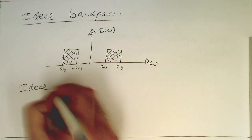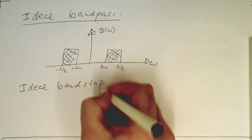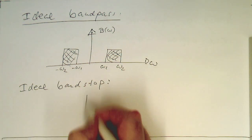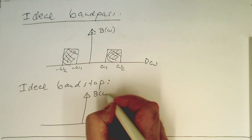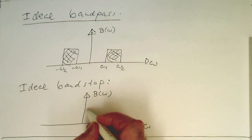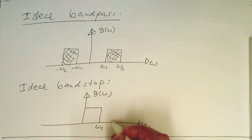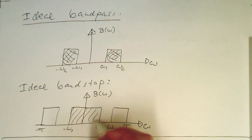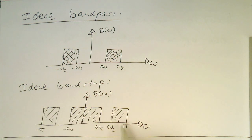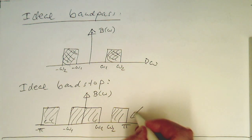And then also just the ideal band stop. Quite useful for our ECG assignment to filter out 50 Hertz. So again, b of omega. And here we have to be again careful. So this stops here at omega 1, goes up to omega 2, and then it finishes at pi. And then this goes up to minus omega 1, and then here this goes up to minus pi. So again, the rule here that this only runs to pi and minus pi, because this corresponds to our Nyquist frequency.